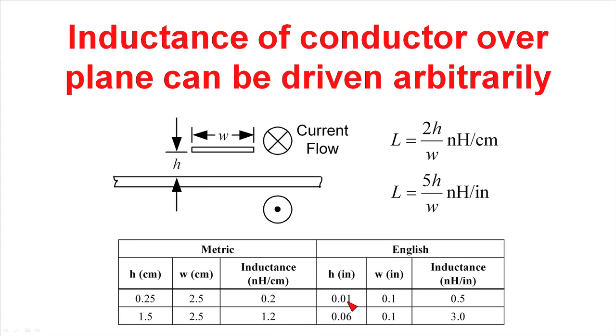If we have a trace that's 10 mils over a circuit board, and this might be in a multi-layer circuit board that has a width of a tenth of an inch, we can see that we can get the inductance quite low. In this case, it's down to half a nanohenry inductance per inch, which is very small.